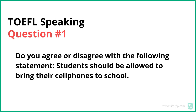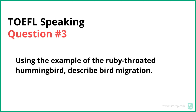For example: 'Students should be allowed to bring their cell phones to school — do you agree or disagree?' You want to make sure you answer that question well. Or using the example of the ruby-throated hummingbird, describe bird migration. Notice how it doesn't say include two examples. Some students say they have to include two examples for question three. No — answer the question well. It's not saying give two examples, or say everything the professor said in the listening. It's saying answer the question well.